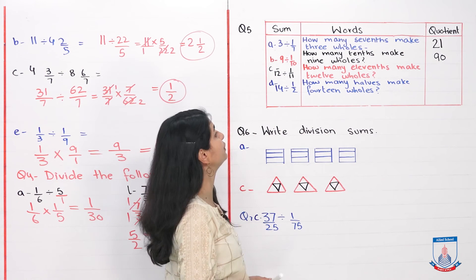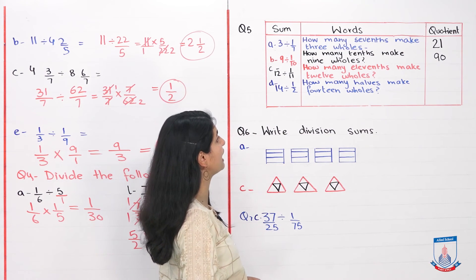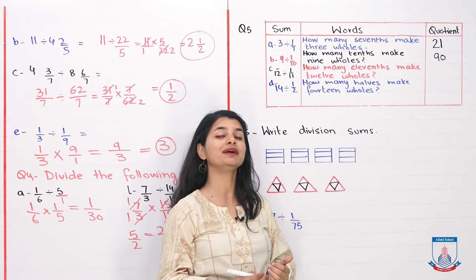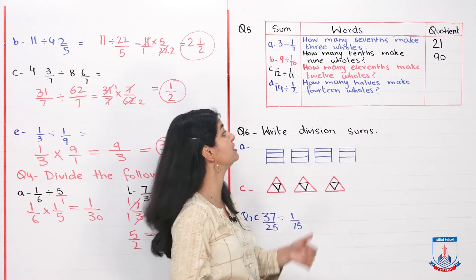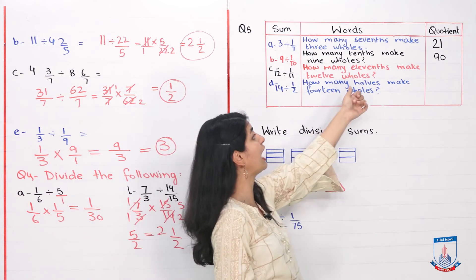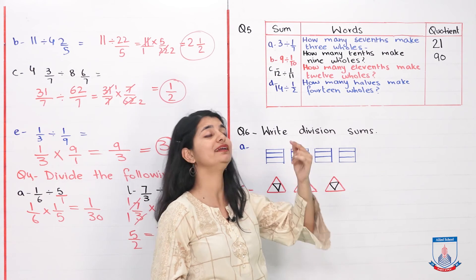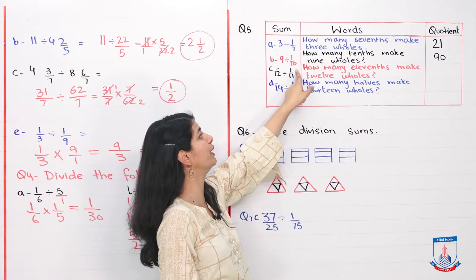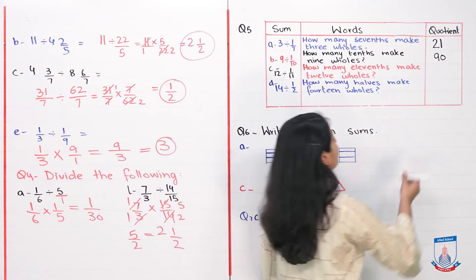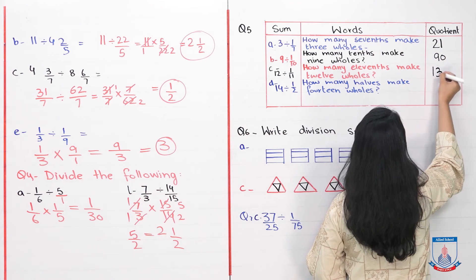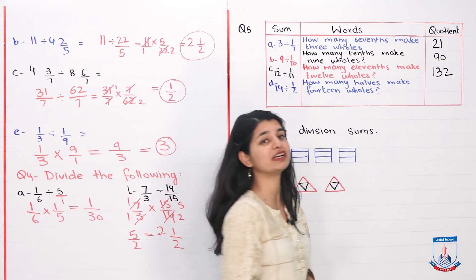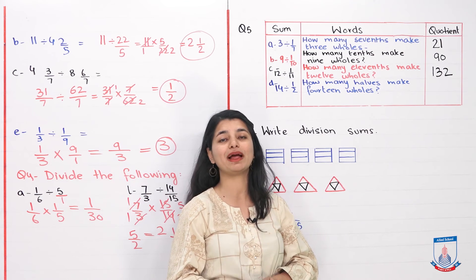Part C: twelve divided by one over eleven. Eleven parts, so we say elevens, and then we say twelve wholes. So we say how many elevens make twelve wholes? Invert it, multiply it, eleven goes up, multiply by twelve. The answer is one thirty two. You can also check by multiplying twelve and eleven.